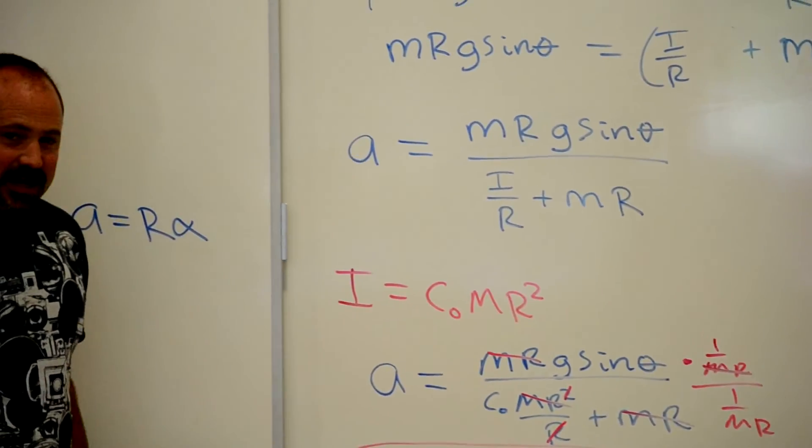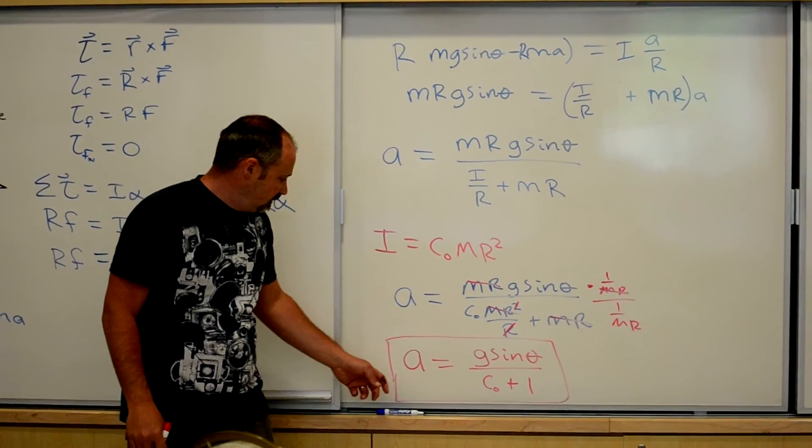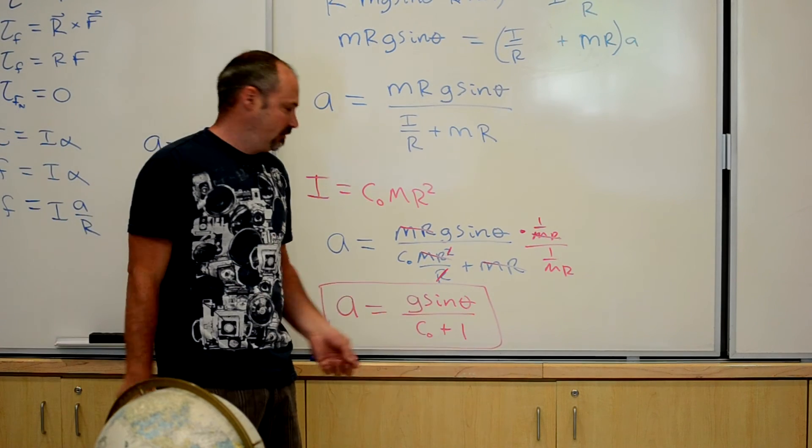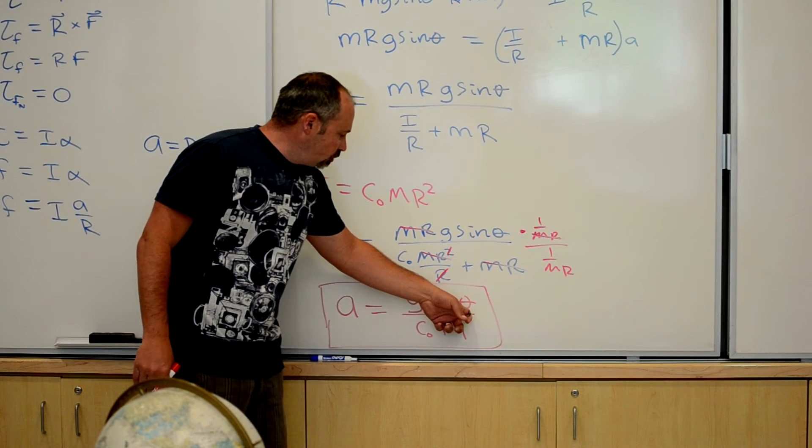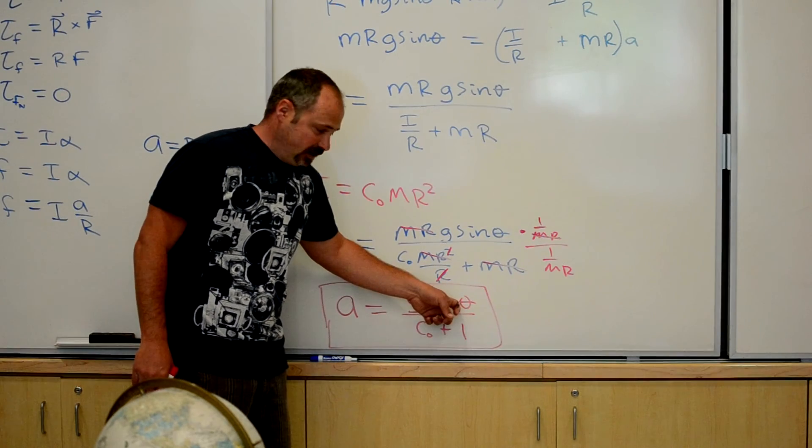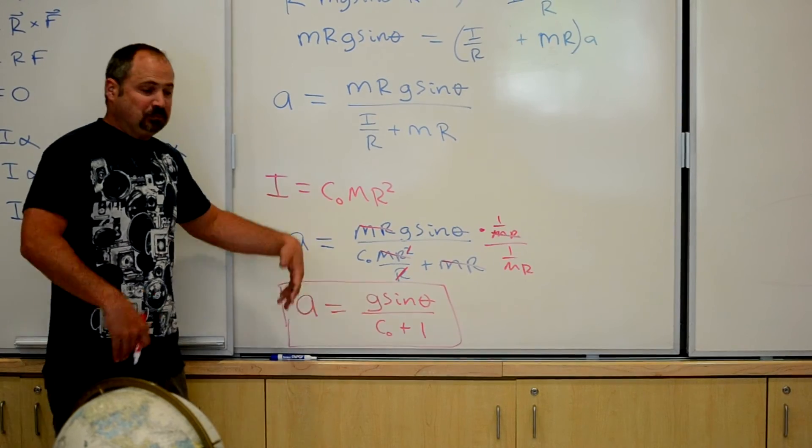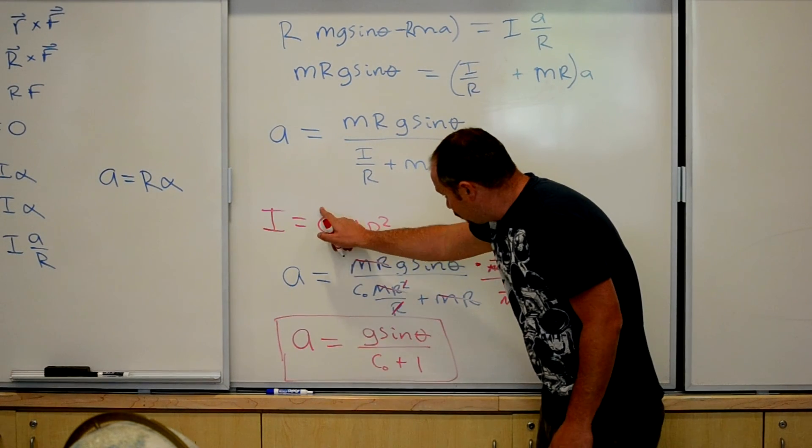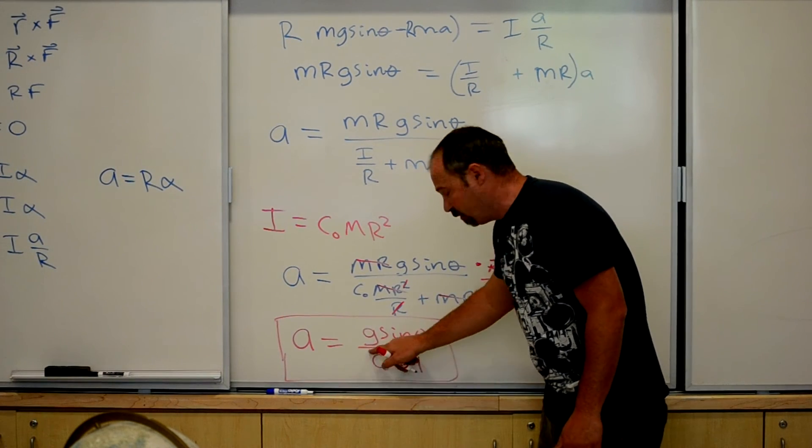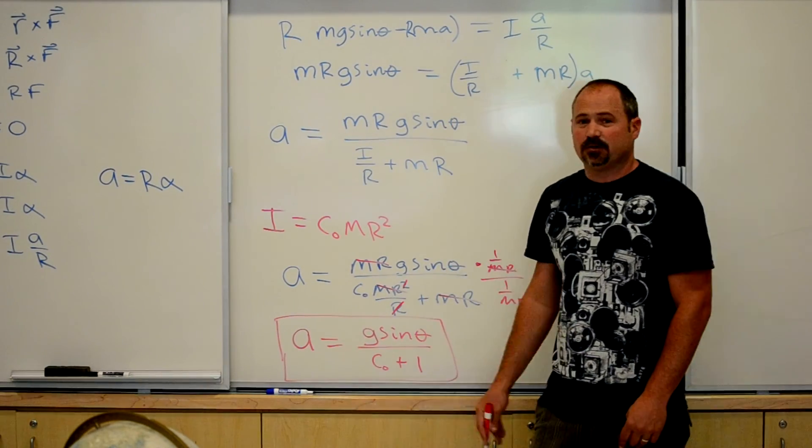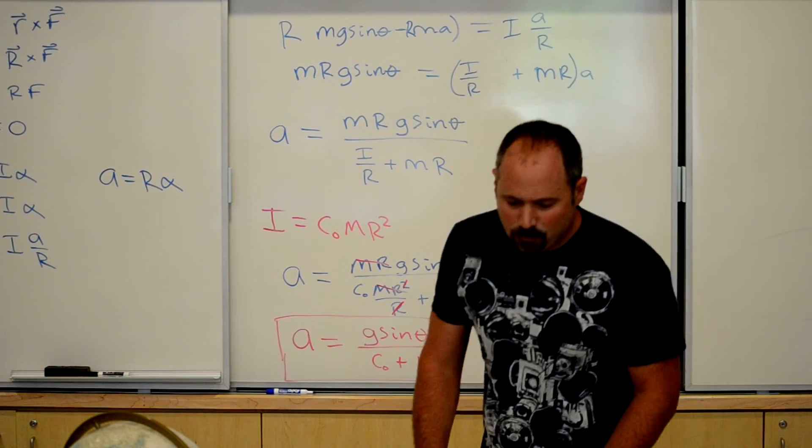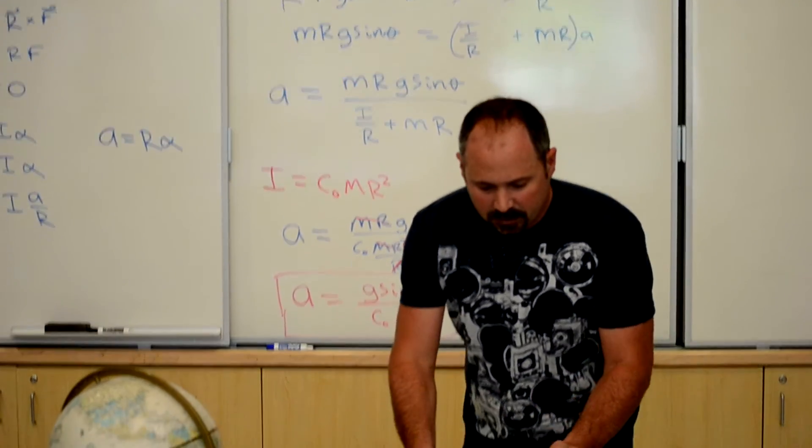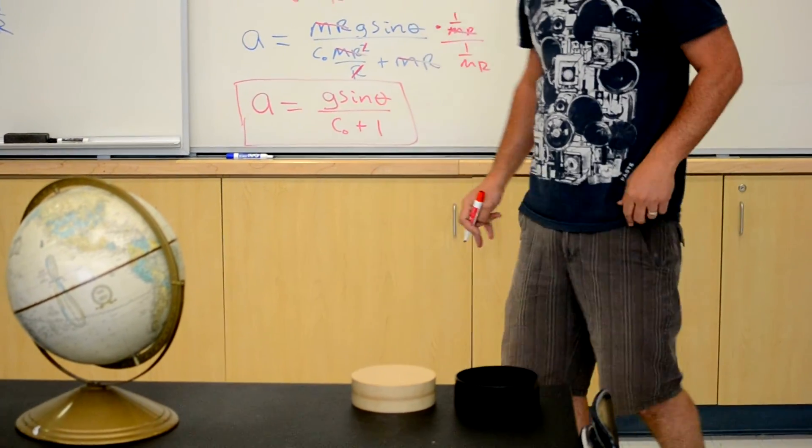So does the answer make sense? Well, the larger the acceleration of gravity, the larger the acceleration down the incline. That makes sense. So on Jupiter, they're going to roll down faster than on Earth. What else? The larger the angle, the larger sine theta will be and therefore the larger the acceleration. That also makes sense. And finally, the larger the moment of inertia given by this coefficient c naught, so therefore the larger c naught is, the smaller the acceleration. That makes sense too. If you have more moment of inertia, you resist being accelerated angularly more, and therefore you won't be going as fast after a given amount of time.